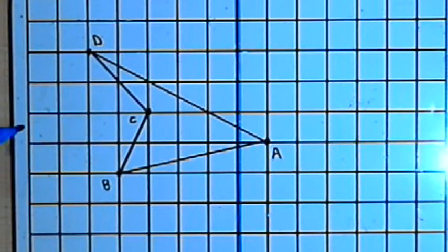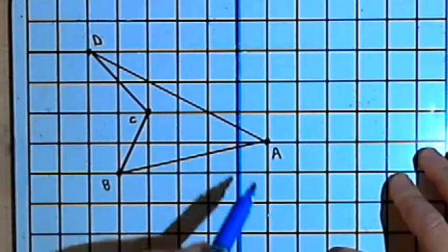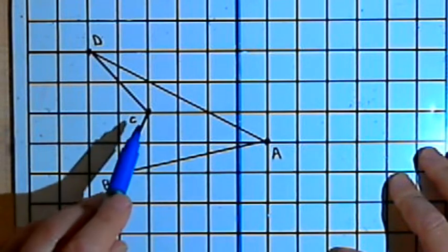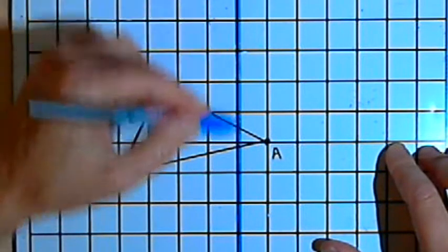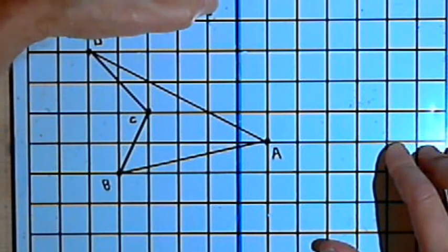The image I'm going to use is this quadrilateral. I've labeled it ABCD. And I'm going to reflect it across this blue line. We'll call that line L.